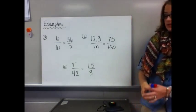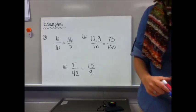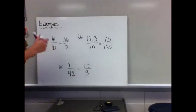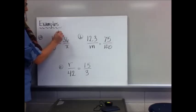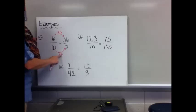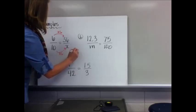For example A: 6 over 10 equals 36 over x. You could use the multiply-across method here. To go from 6 to 36 you multiply by 6, so do the same on the bottom: 10 times 6 is 60. So x equals 60.